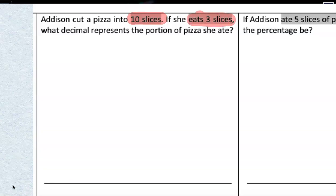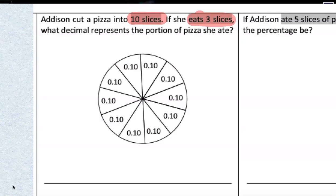And she eats three of those slices. Let's think about what a model of this might look like. For right now, I want you to ignore the decimals that are on that circle. And let's just highlight three of the slices that she ate. One, two, three.